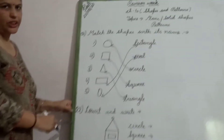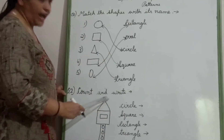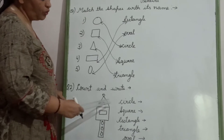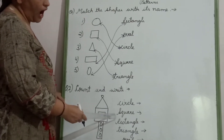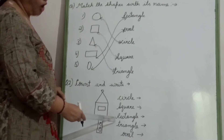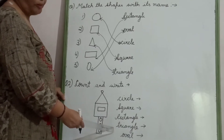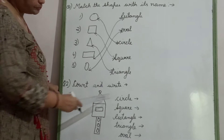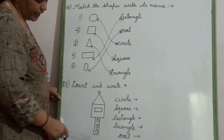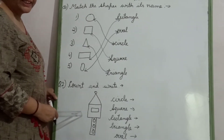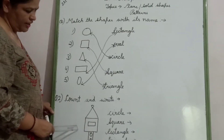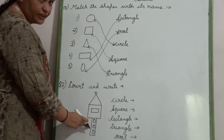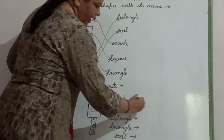Now come to question number 2: Count and write. One picture has been given to you. You have to count how many circles are there, how many squares, how many rectangles, how many triangles, and how many ovals. Let's start with circle. Can you count and tell me how many circles are there? Yes — 4. So we will write down 4.